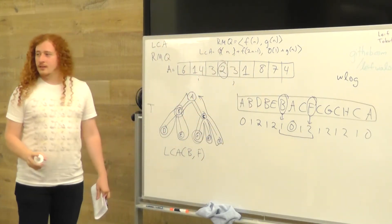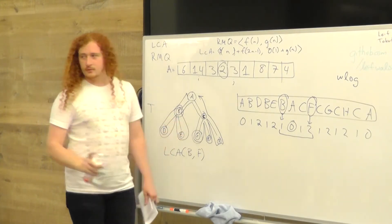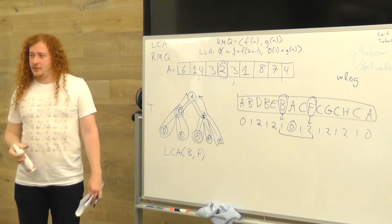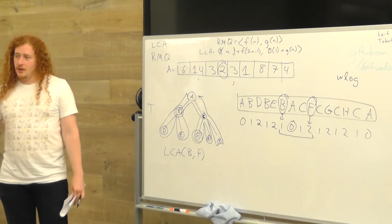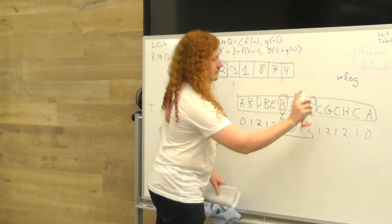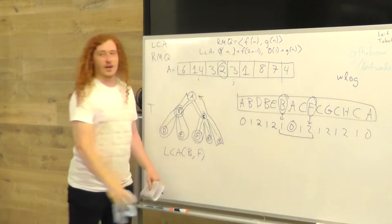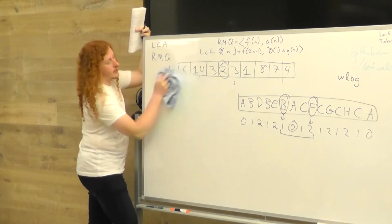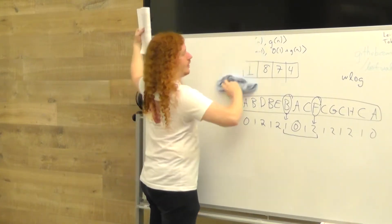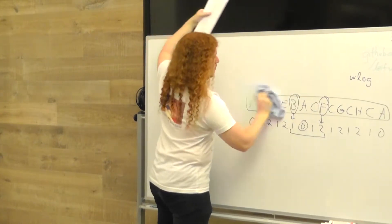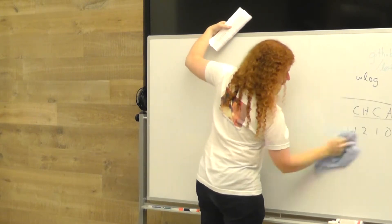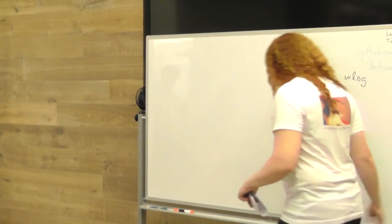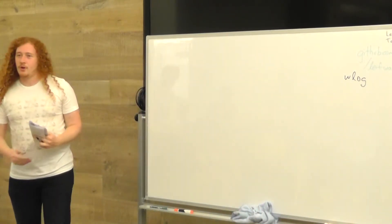How long does that take? N squared. If you ask a freshman, they'll tell you N cubed if they know what they're talking about. But once you learn dynamic programming, you can do it in N squared. If you've got all pairs of N elements, that's N squared elements — and then you store them in a table.